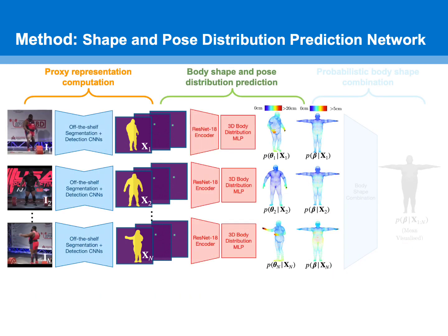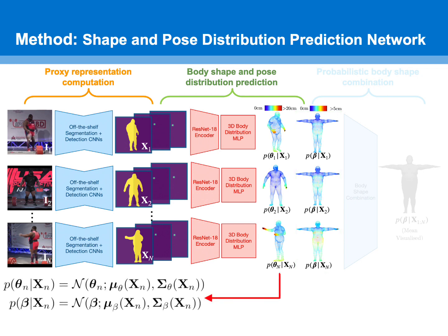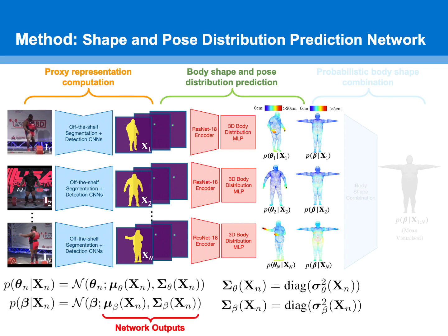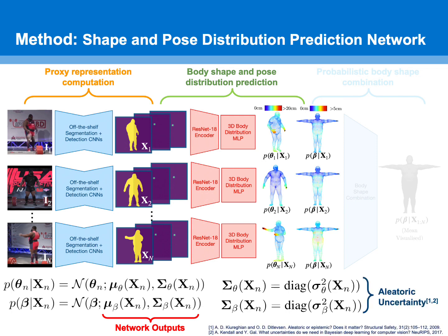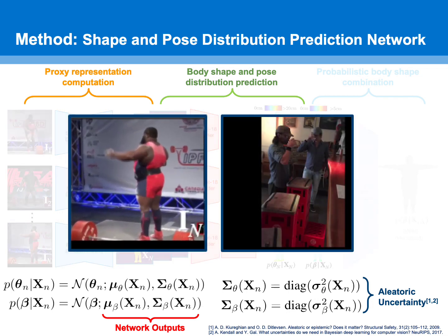Next, we use a deep neural network to predict probability distributions over the subject's pose in each image as well as their body shape, conditioned on the corresponding inputs. Specifically, means and covariances of Gaussian distributions over pose and shape are output by the neural network. Covariance matrices are assumed to be diagonal and represent the aleatoric uncertainty in the SMPL parameters explaining the input images. This is useful, for example, when self-occlusion or occluding objects cause uncertainty in the corresponding SMPL parameters.